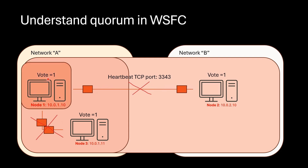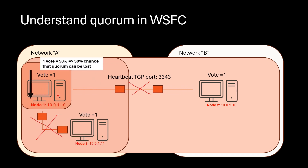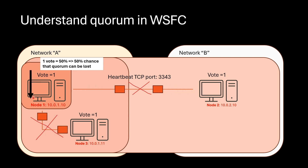There were two votes before and now only one vote is left, which means 50% of the vote remains. It is neither minority nor majority. In this case there is a 50% chance that the cluster loses quorum. If quorum is lost, cluster service in the primary node goes down — in other words, you face outage. Therefore, node-to-node communication via heartbeat and keeping a majority of votes in the cluster is very important.